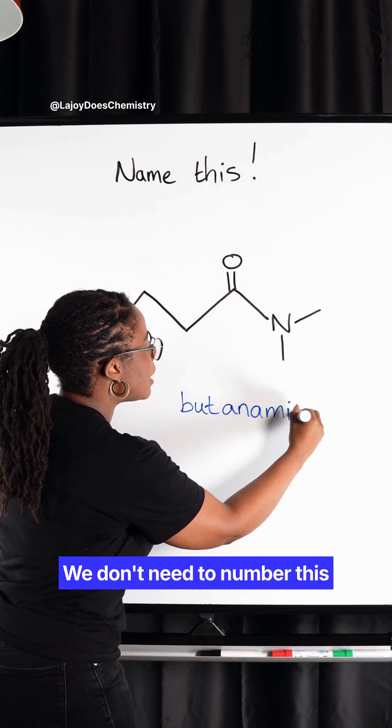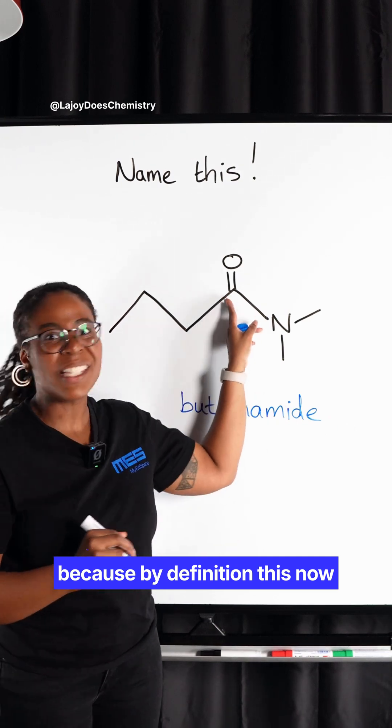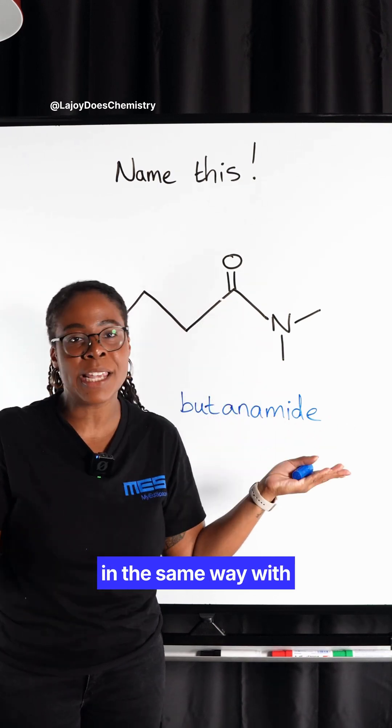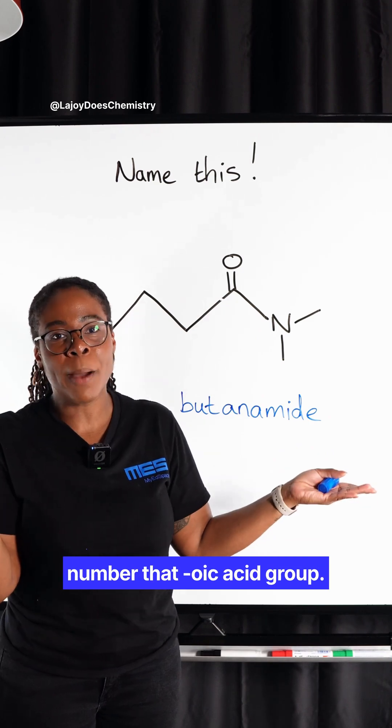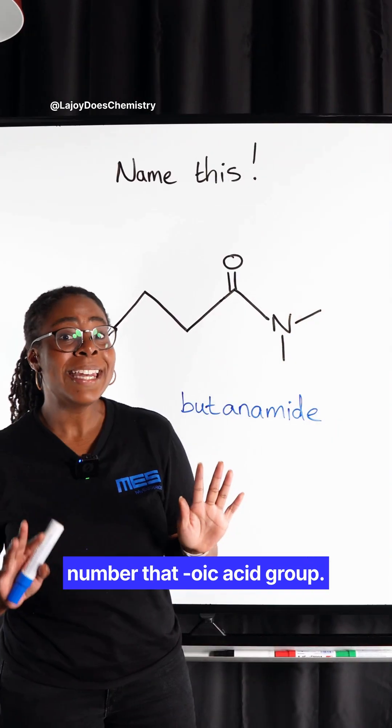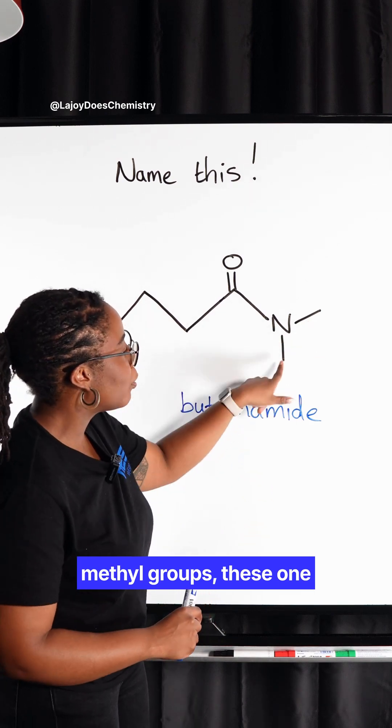We don't need to number this because by definition this now has to be carbon number one, in the same way with carboxylic acids we don't number that oic acid group. Now we have these two methyl groups, these one carbon branches sticking off of this nitrogen.